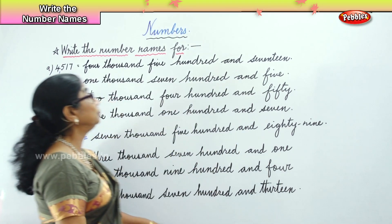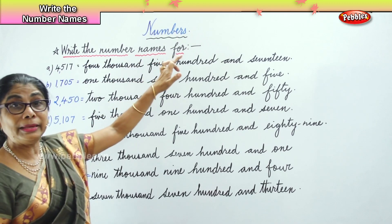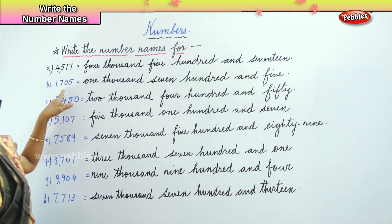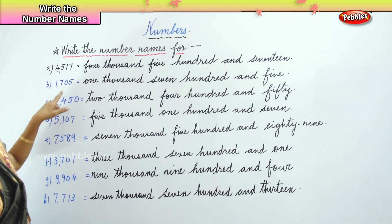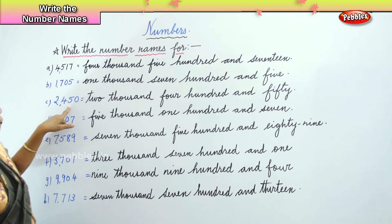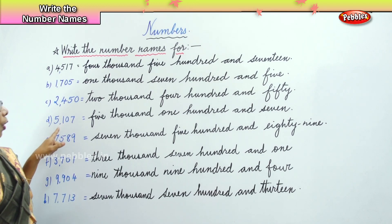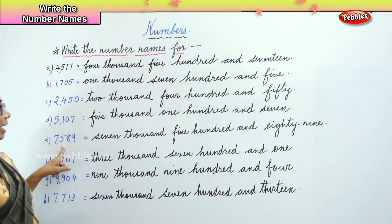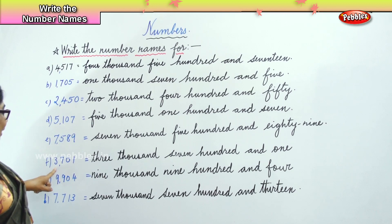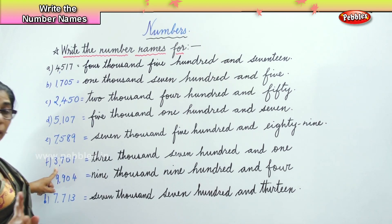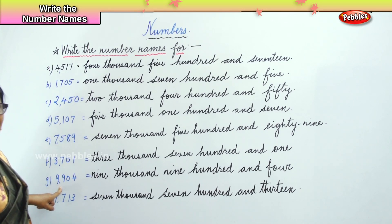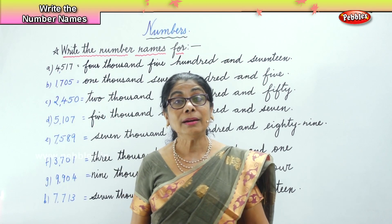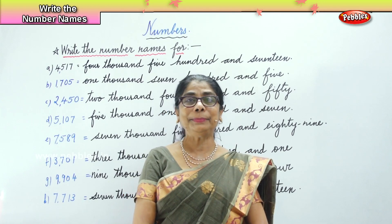Today we learned to write the number names: four thousand five hundred and seventeen; one thousand seven hundred and five; two thousand four hundred and fifty; five thousand one hundred and seven; seven thousand five hundred and eighty-nine; three thousand seven hundred and one; nine thousand nine hundred and four; and seven thousand seven hundred and thirteen. We learned to write the number names. Thank you.